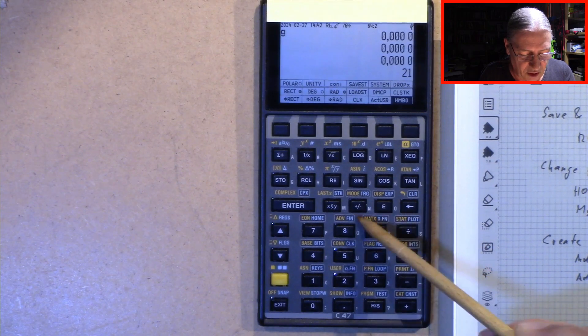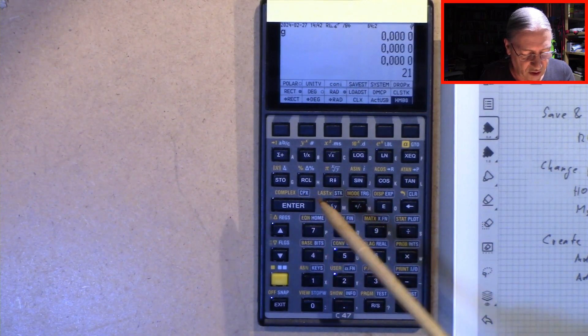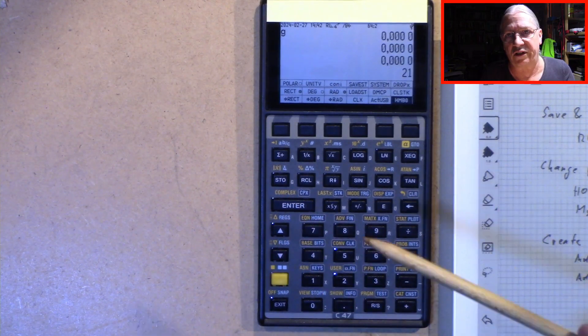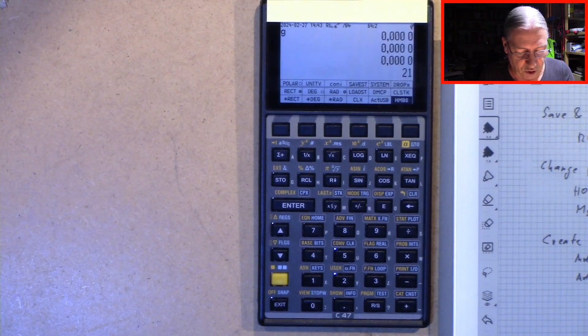You see here these texts here in frames, these are all menus. And what is written without a frame, these are functions which are called directly by a key press.